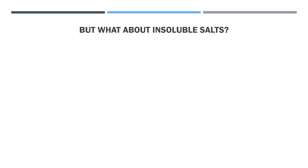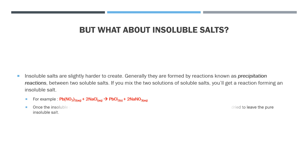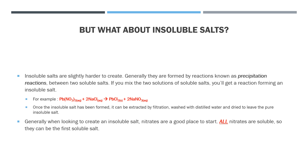That covers the production of soluble salts from soluble and insoluble bases, but there are also insoluble salts. To produce them, we use what is known as a precipitation reaction — where a precipitate is formed through a reaction. We have already encountered such a reaction in the test for sulphate ions, which forms a white precipitate. Forming an insoluble salt is very similar: we react together two soluble salts, and they react to form an insoluble salt. Once the insoluble salt is formed, it can be extracted by filtration, then washed and dried to obtain the pure form. When looking to create an insoluble salt, a good place to start is with nitrates, as every nitrate is soluble.